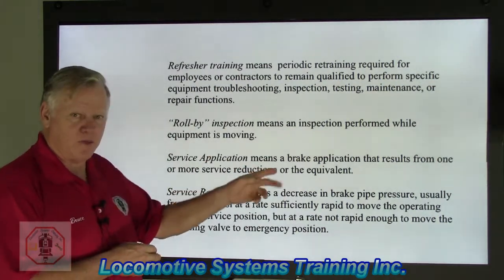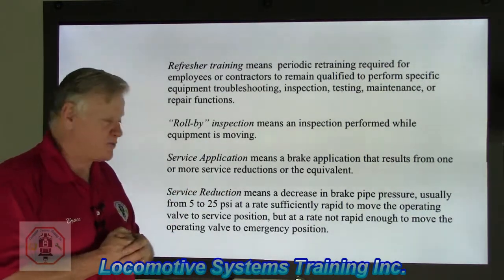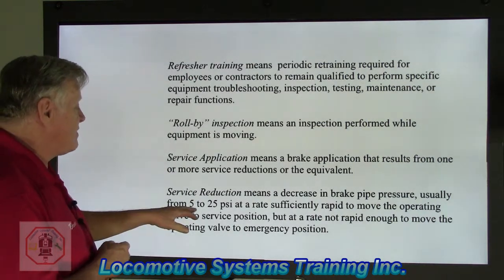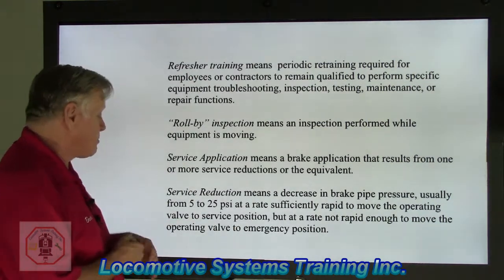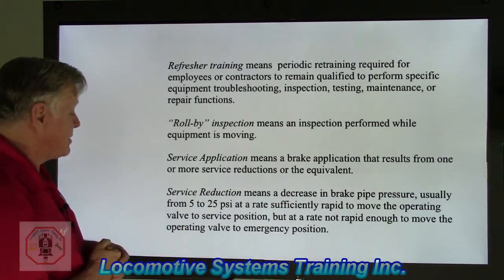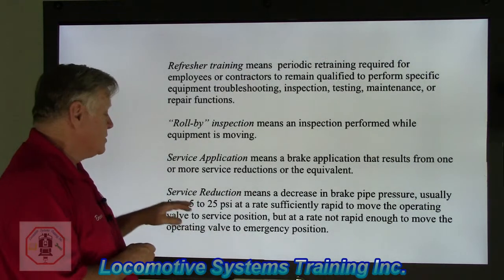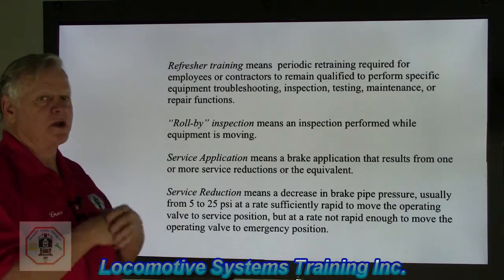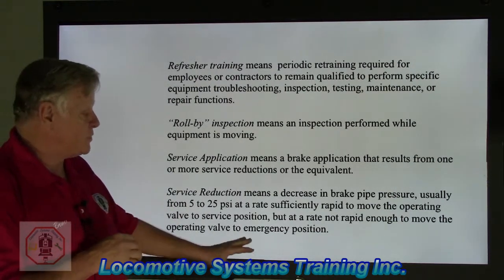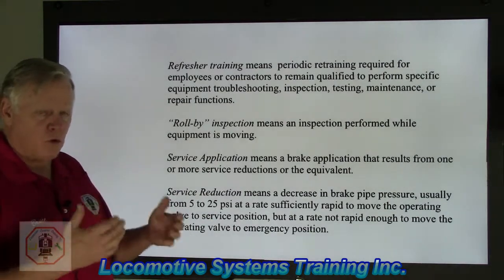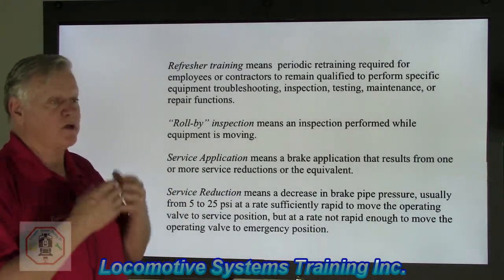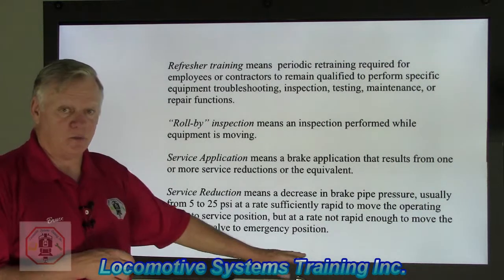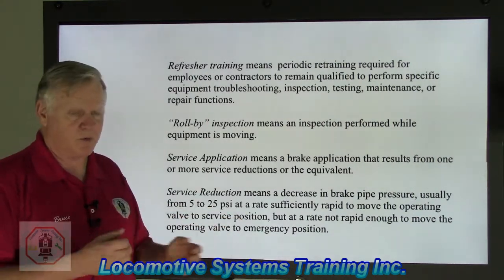We're giving up two things to get one thing — we want brakes applied, which means we're going to slow or stop the train. Service rate or service reduction means a decrease in brake pipe pressure, usually from 5 to 25 psi, at a rate sufficiently rapid to move the operating valve to service position, but at a rate not rapid enough to move the operating valve to emergency position. Service rate reduction means we are going to apply the brakes firmly but in a controlled manner so as not to go into an emergency situation — a controlled stop without thermal damage to the wheels, any damage to the brake rigging, or even the rail, and we are not in the emergency position.